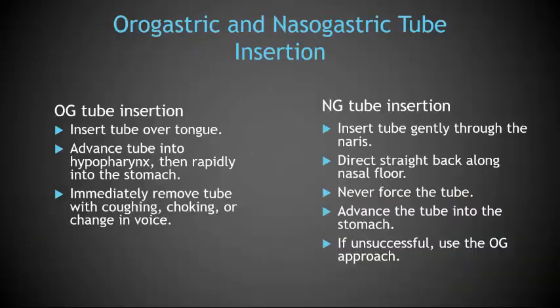For OG tube insertion, insert the tube over the tongue, advance the tube into the hypopharynx, then rapidly into the stomach, and immediately remove the tube if you have any coughing, choking, or change in voice, because that could indicate tracheal placement. For NG tube insertion, insert the tube gently through the nearest nostril, directing it straight back along the nasal floor. Never force the tube. Advance the tube into the stomach. If unsuccessful with the NG tube but gastric decompression is needed, use the OG approach.